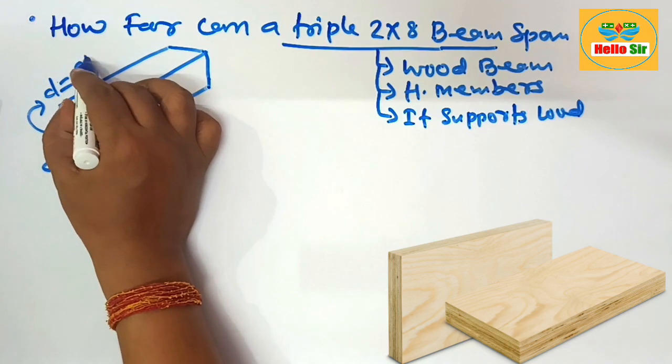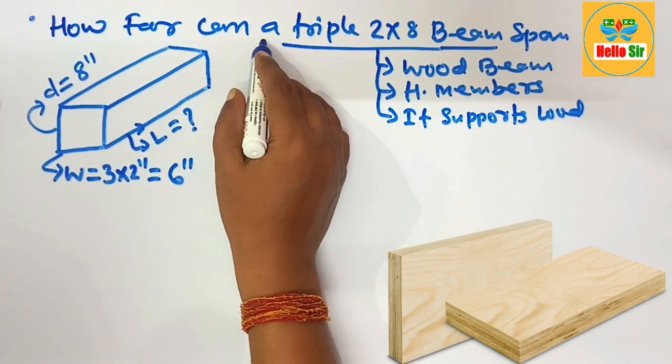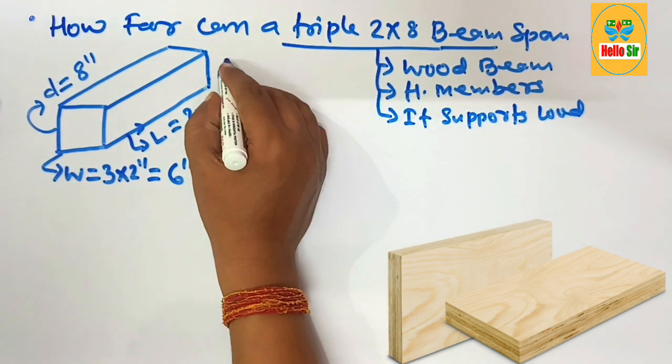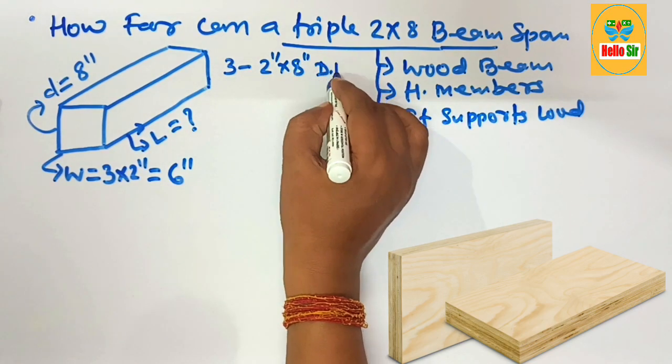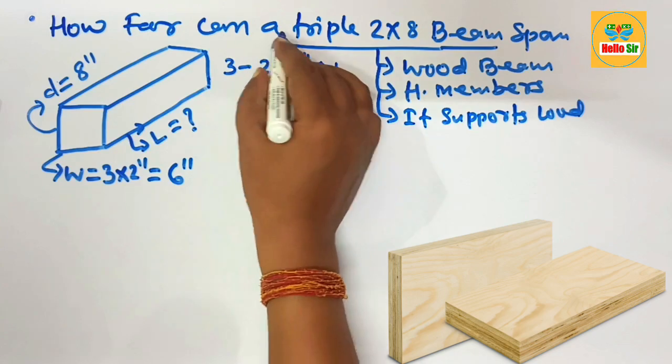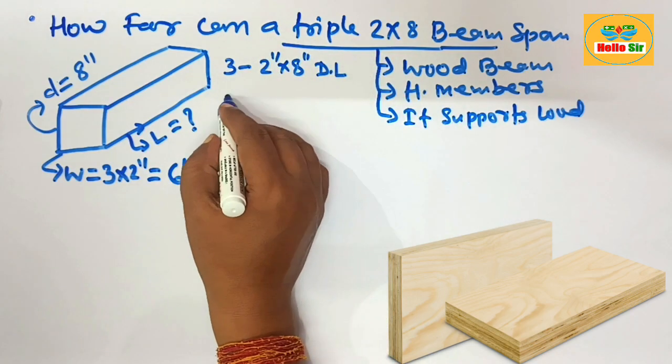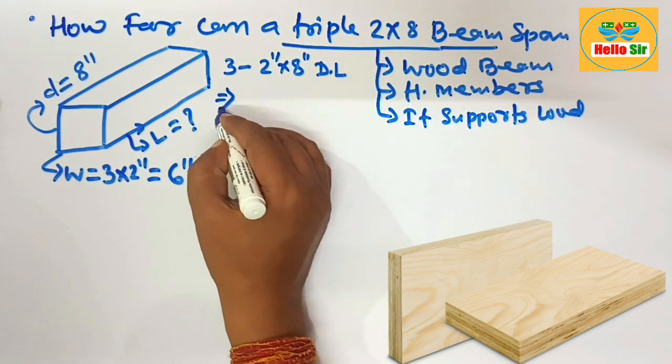Here, a triple 2x8 beam means three pieces of 2x8 inch dimensional lumber nailed together to form a triple ply 2x8 beam. And this is also written as 6 inch by 8 inch dimensional lumber.